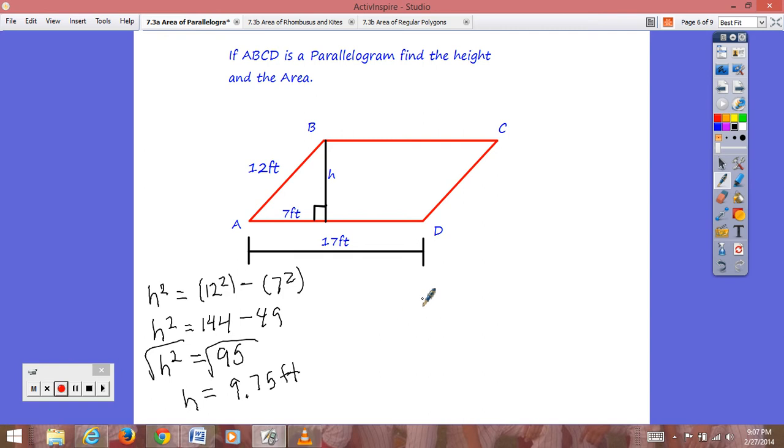So now to find our area, we have our base times height. So our area equals, the whole length of our base here is 17, 17 feet. And then multiply that by our height, which we found to be 9.75 feet. Multiply that out, and we find that our area comes to be 165.75 square feet. So that is our area.